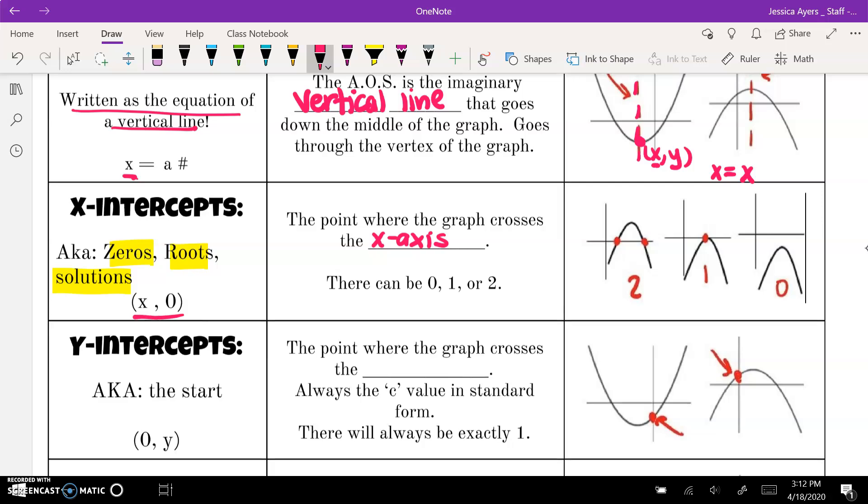Remember that an x-intercept is a point, so we write it x comma zero. You can see in these graphs, if it crosses the x-axis twice, there are two, one here and one here. If the vertex is on the x-axis, then there would be only one x-intercept. And if the graph doesn't cross the x-axis at all, then you would have no x-intercepts.